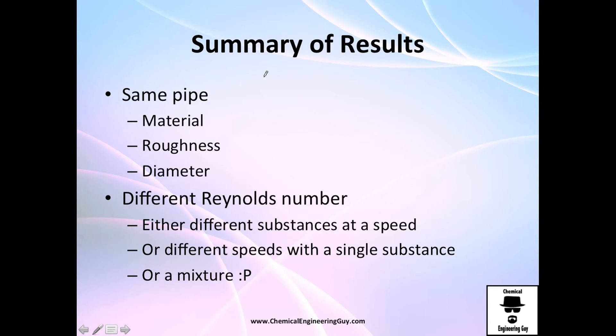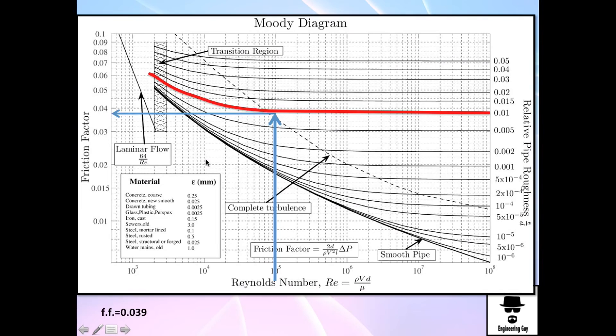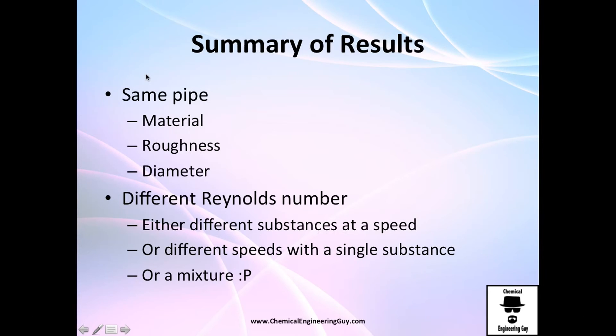Let's analyze the results. Same pipe means same material, same roughness and same diameter. Therefore, this red line, remember guys, I told you that we will be on this red line. It's because we already set the definition of the pipe.